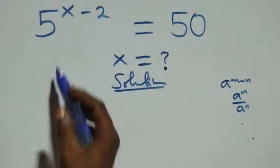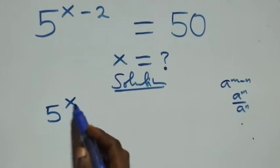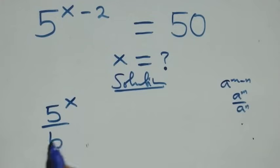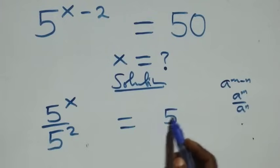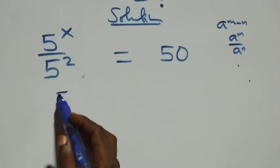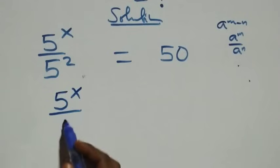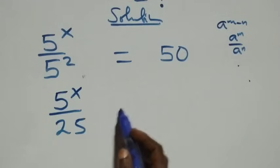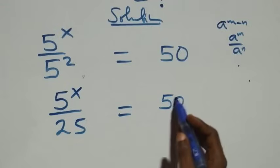What we have is 5 raised to power x over 5 squared equals 50. This can also be written as 5 raised to power x over 5 squared — that's 25 — then equals to 50 over 1.